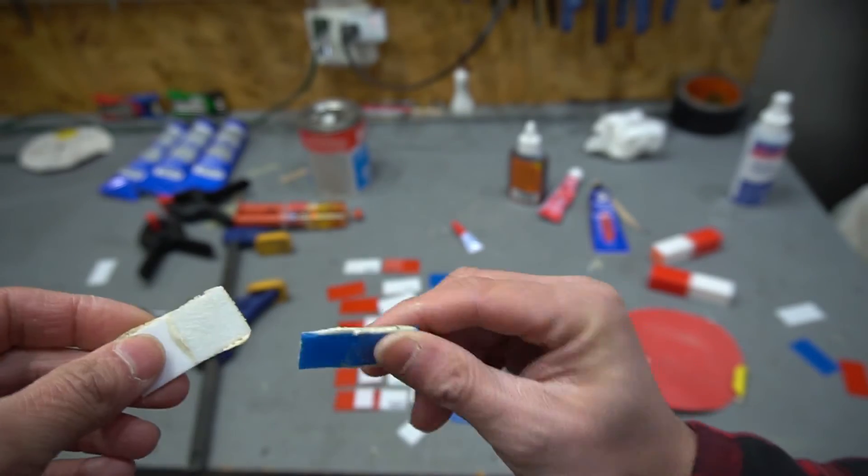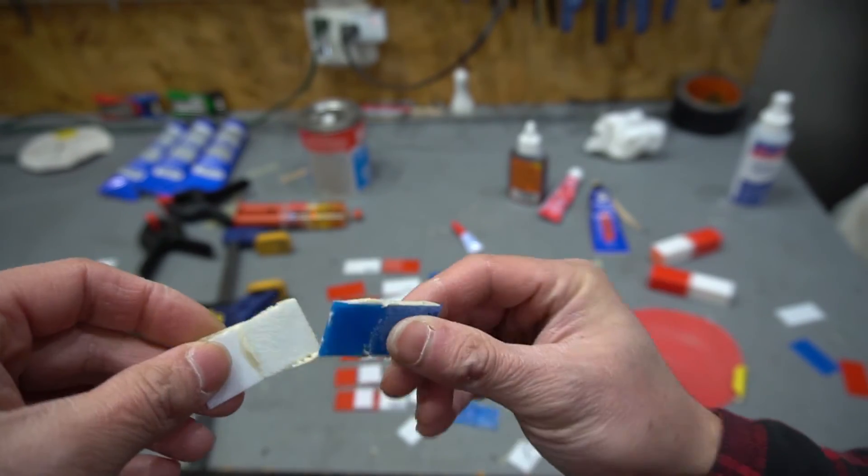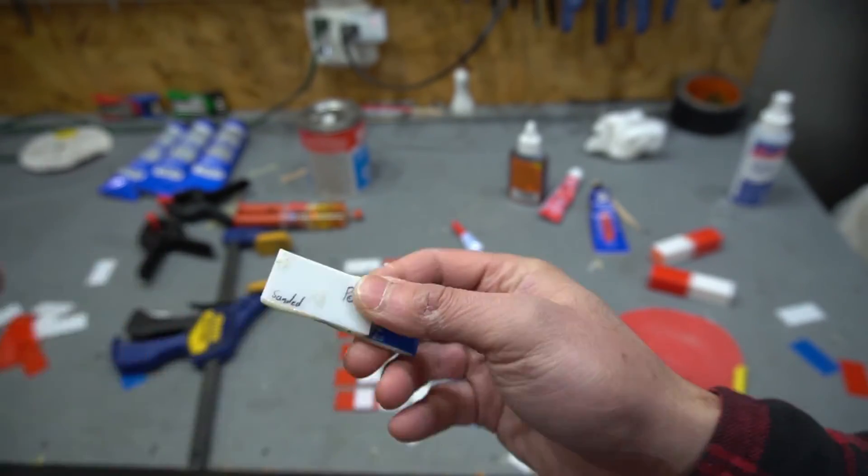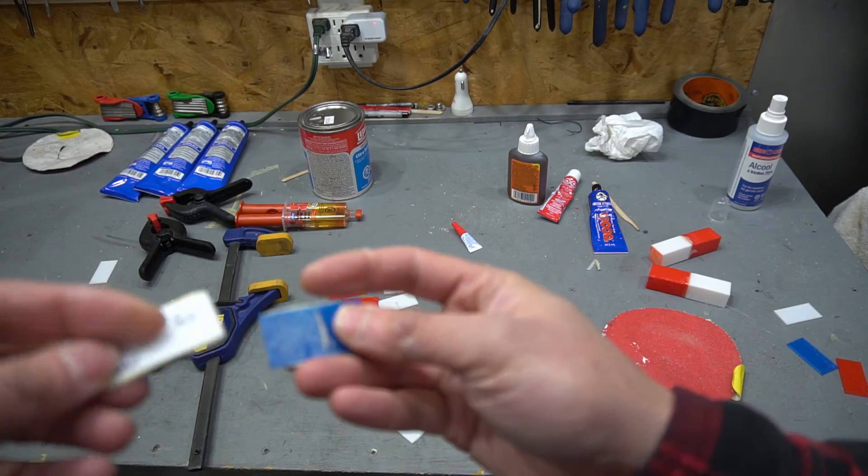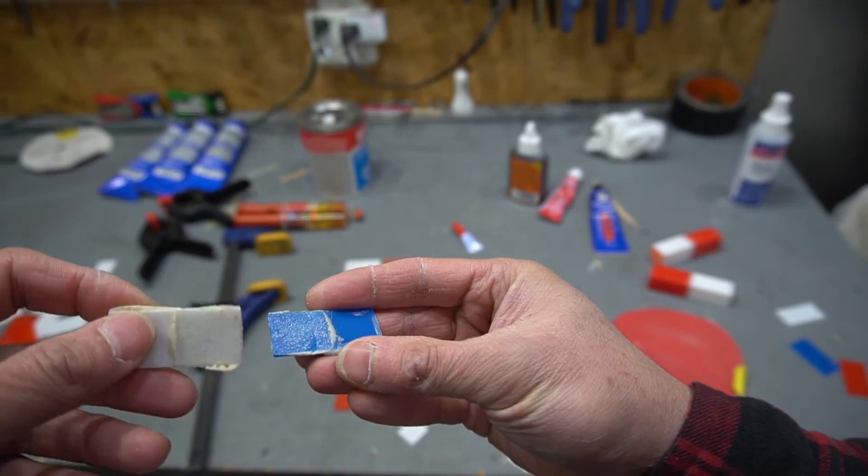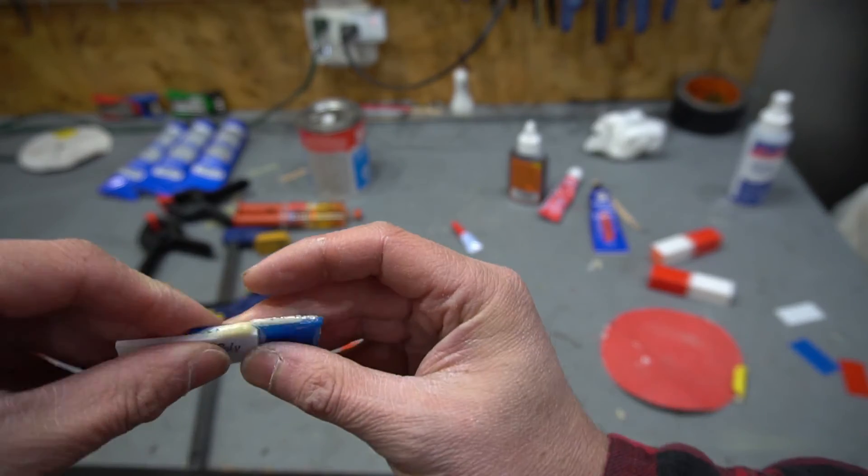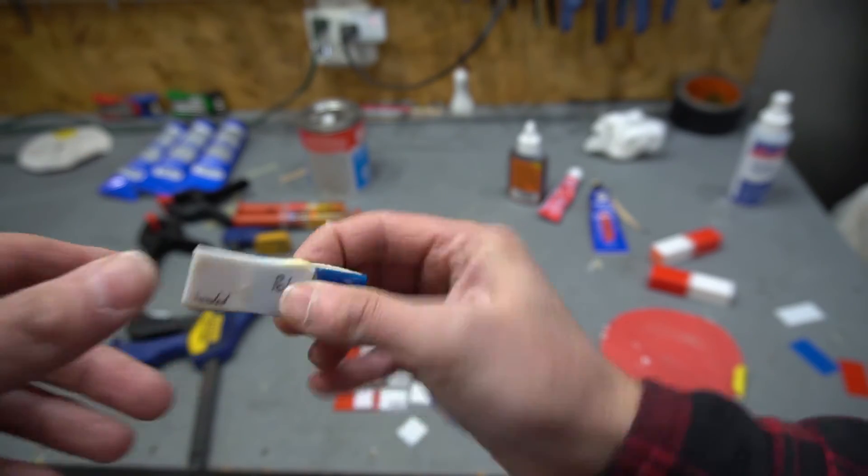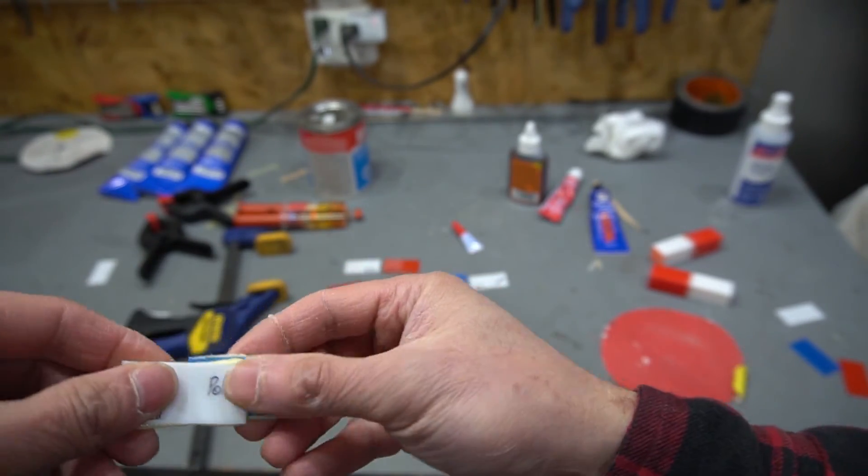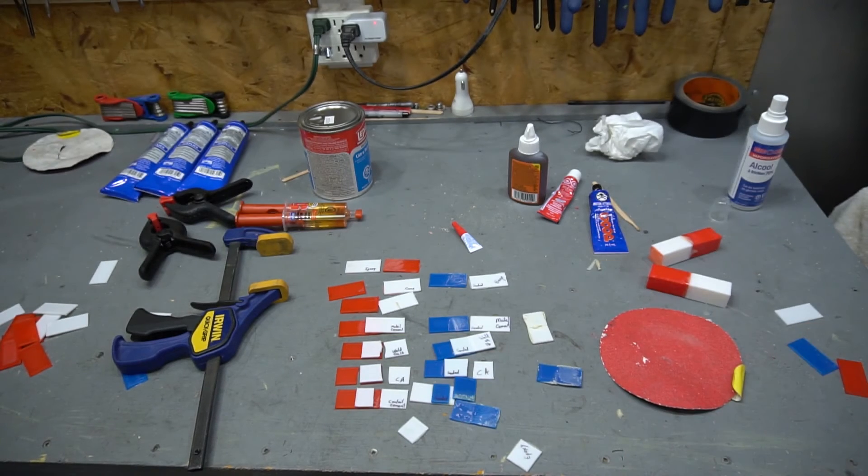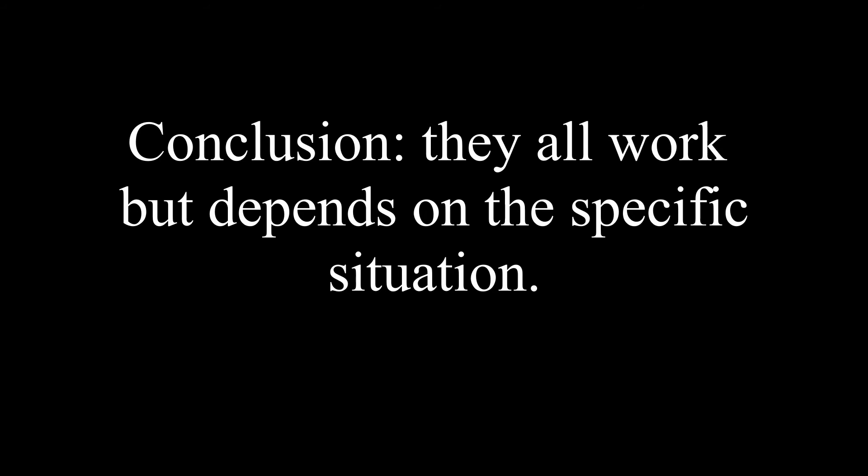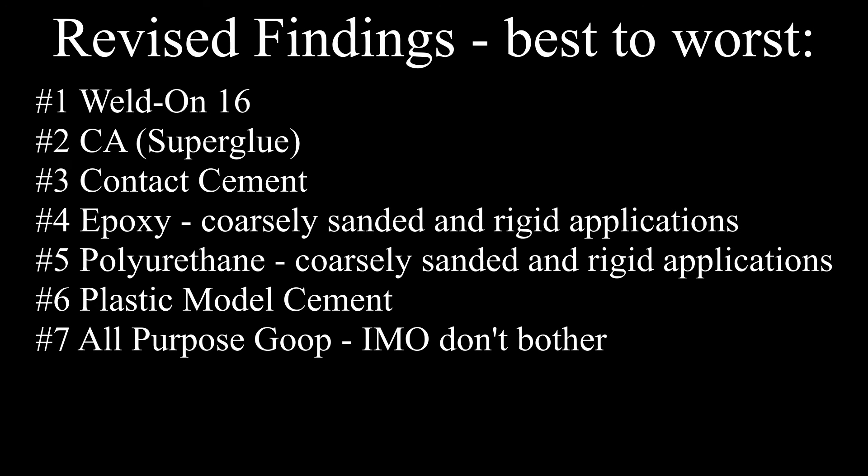So I wanted to make sure to give all these a fair shake. My methodology might be a little flawed, but I don't know. So post in the comment what you guys, your experiences and share with the rest of the 3D printing world. Anyways, that's what I found. The last thing to factor in is the top three glues also set very fast. So if you have parts that can't be clamped, go with the Weldon 16, CA or contact cement.